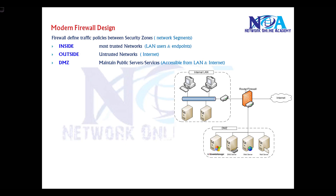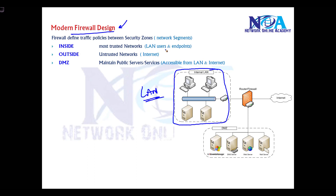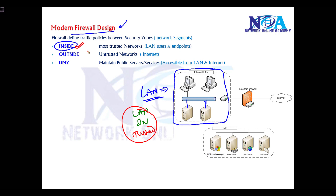Most basic firewall designs include three components — three different network segments. The first is the internal LAN, where all end users and endpoints are connected and access services from servers. This is referred to as the inside network, or trusted network — the most common name used is 'inside.' The second segment is the outside network, which refers to the internet, the untrusted network.